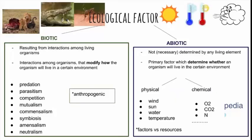Ecological factors can be divided by their nature — they are living or non-living, so biotic or abiotic. Biotic, or living factors, modify how the organism will live in a certain environment, and they come from the interaction between living creatures, independently of the environment they live in. We'll see names of different interactions happening between or within species in a special presentation devoted to biotic factors.